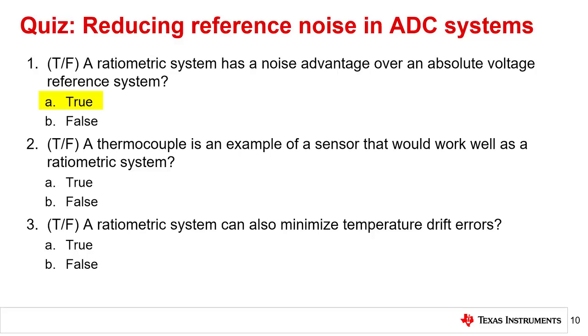Question 2. True or false. A thermocouple is an example of a sensor that would work well as a ratiometric system. The correct answer to question 2 is B, false.